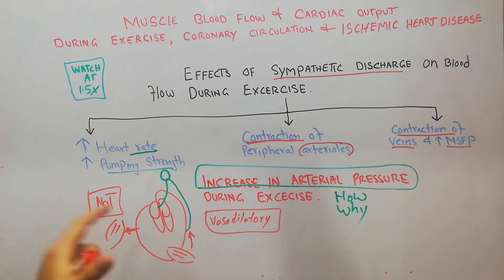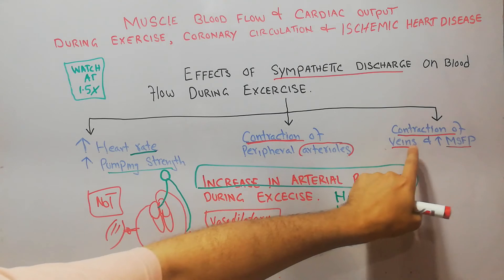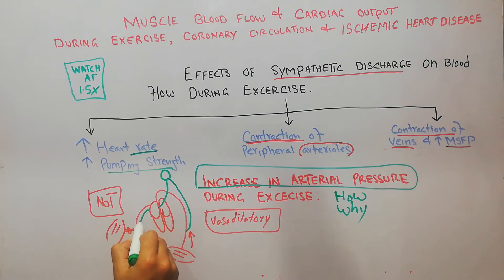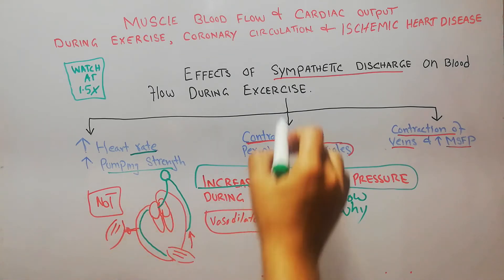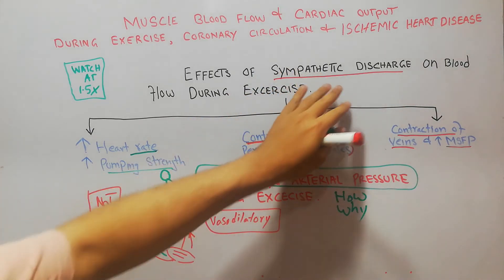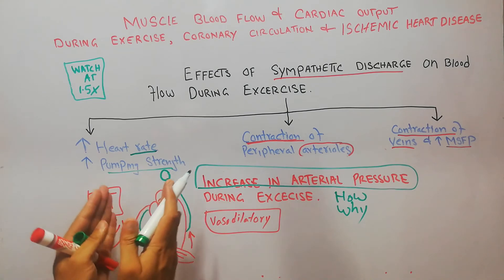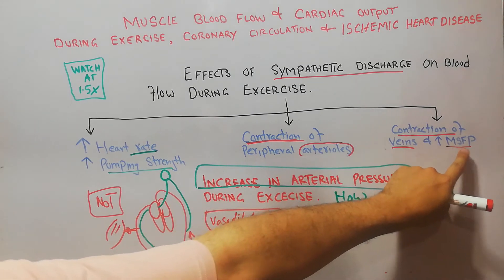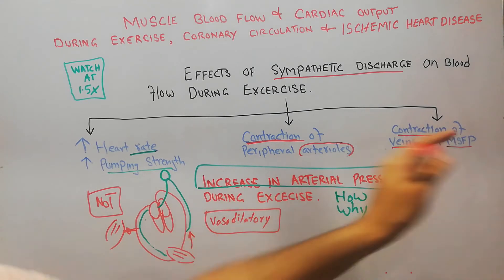The final factor that helps in increasing blood flow and arterial pressure is contraction of the veins and increase in mean systemic filling pressure. These veins take blood from the muscles back to the heart and are normally relaxed or baggy. Due to sympathetic discharge and vasoconstrictor action, these veins also contract and the mean systemic filling pressure — the pressure forcing blood toward the heart — also increases.